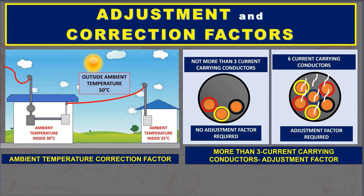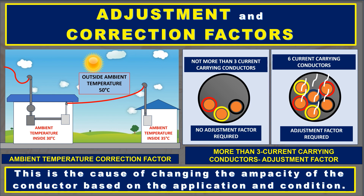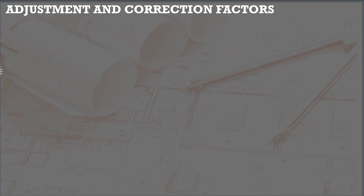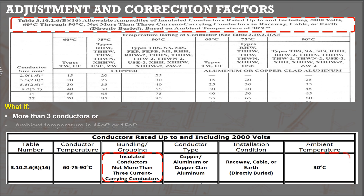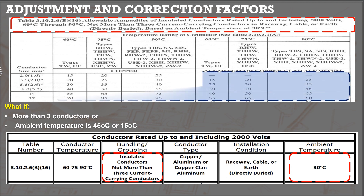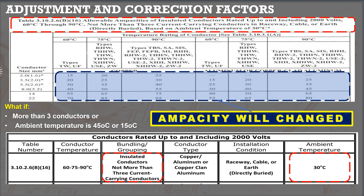What are adjustment and correction factors? Two factors can reduce conductor ampacities: ambient temperature and bundling of more than three current-carrying conductors. Correction and adjustment factors change the ampacity of the conductor based on application and condition. What if conductors are installed in one conduit with more than three current-carrying conductors, or if the ambient temperature is more than 30 degrees Celsius? The ampacity given in the table will change — it can become higher or lower.